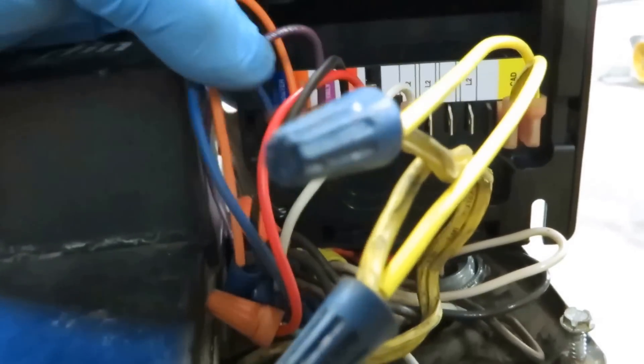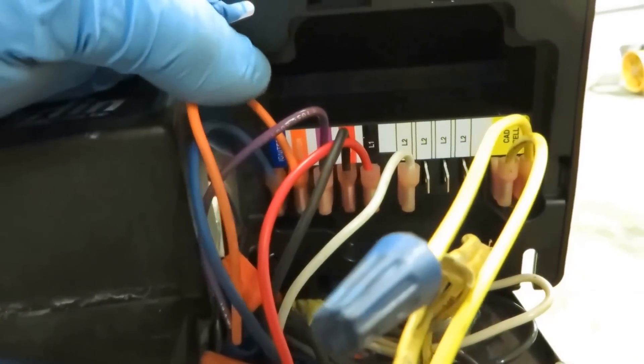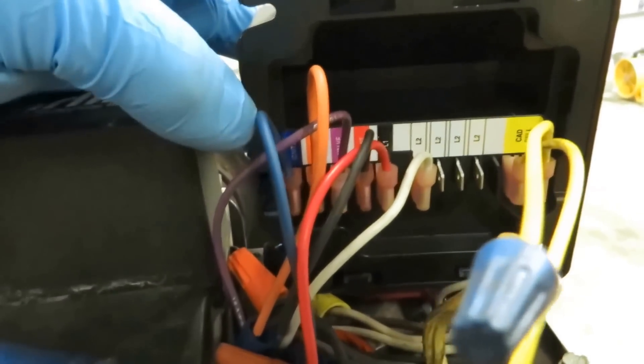The L1 is the black. The purple is the solenoid valve. Orange is the motor, and the blue is the transformer.